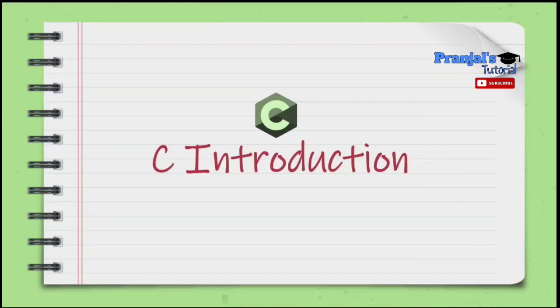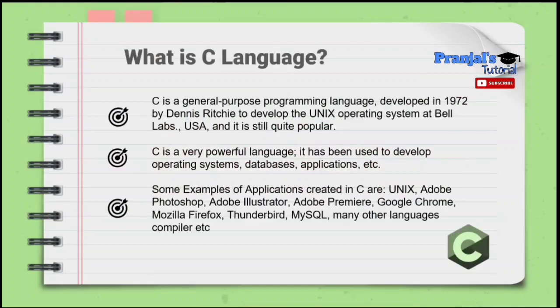If you enjoy the series, please subscribe to the channel. What is C language? C is a general purpose programming language, which was developed in 1972 by Dennis Ritchie.